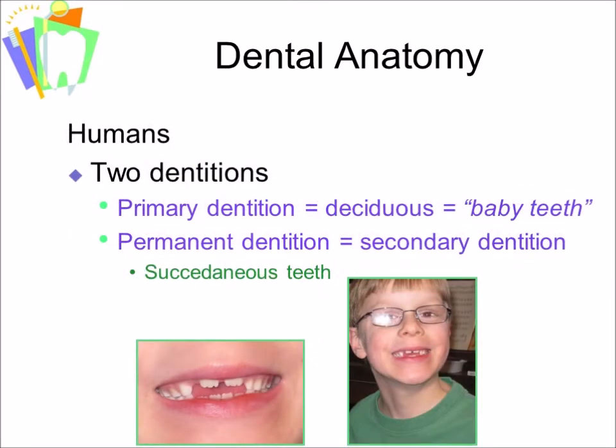The teeth that replace primary teeth, such as these incisors, have another name — they are called succedaneous teeth. They succeed, they follow the primary tooth. So numbers 8 and 9 are both succedaneous teeth, as they replace numbers E and F when E and F are exfoliated.